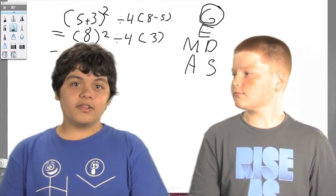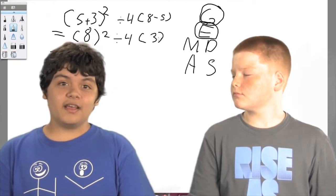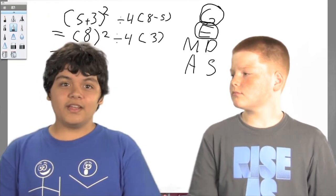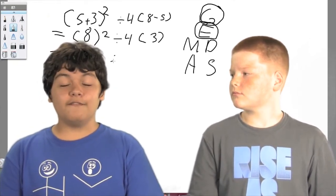G is for grouping symbols, E is for exponents, M is for multiplication, and D is for division. For multiplication and division, you do whatever problem you see first, from left to right.